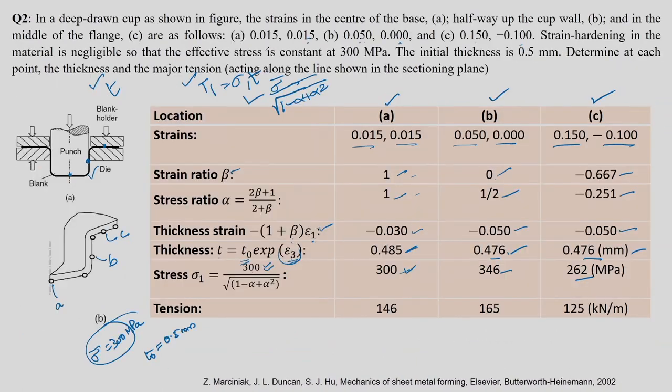Then t_1 equals sigma_1 times T. Multiplying: 300 times 0.485, 346 times 0.476, and 262 times 0.476, you get t_1 for each location. By knowing t_1 and t_2, you can find not only the tensions corresponding to the principal stresses, but also at which stage of deformation maximum tension — equivalent to instability — will occur.